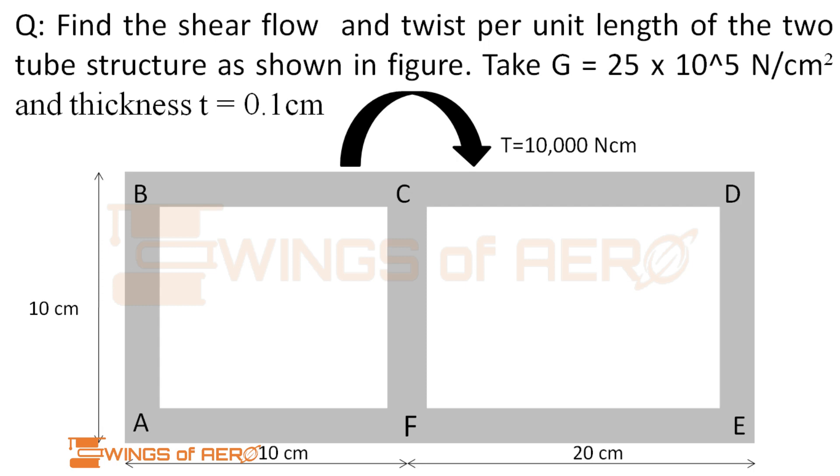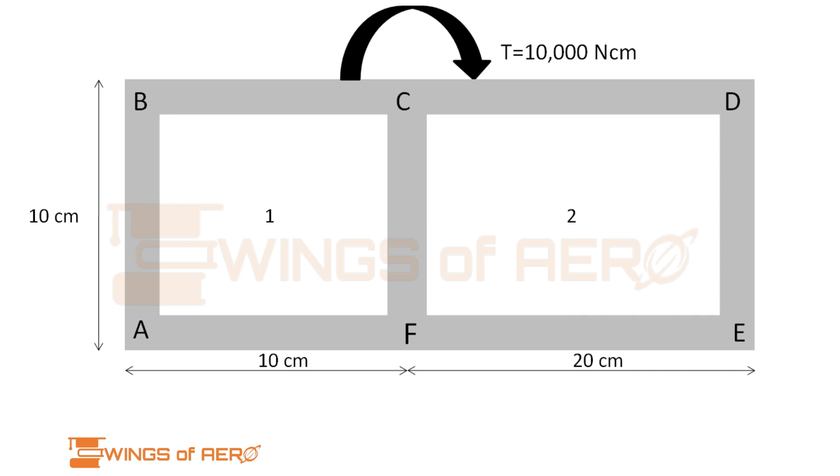As you can see in this figure, we have a two-cell structure with dimensions given and the torque is T equals 10,000 Newton centimeter. Let ABCF be considered as cell 1 and CDEF as cell 2. Let's find the areas: A1 equals 10 cross 10, so we get 100 centimeter square, and A2 is 10 cross 20, we get 200 centimeter square.